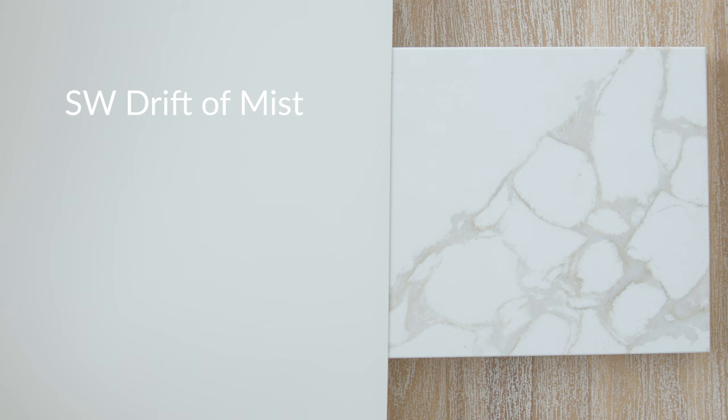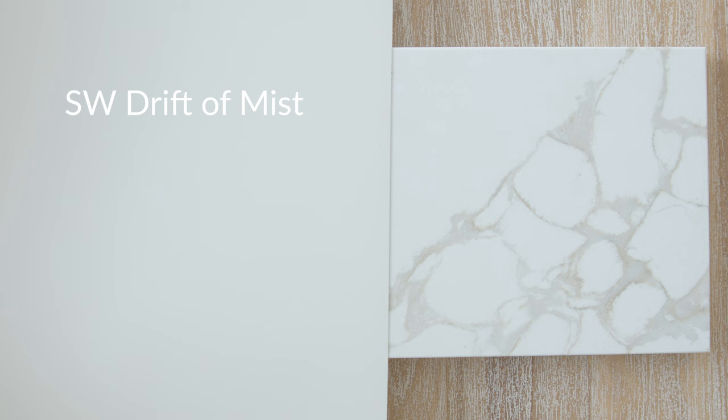Now let's say you have a kitchen countertop that's a warm off-white, maybe with a little bit of a taupe undertone. Watch what happens when you compare it with Sherwin-Williams Drift of Mist — it pairs beautifully together, and notice how it pairs and contrasts really well with the taupe undertones. So it's really important to compare this with your fixed elements.